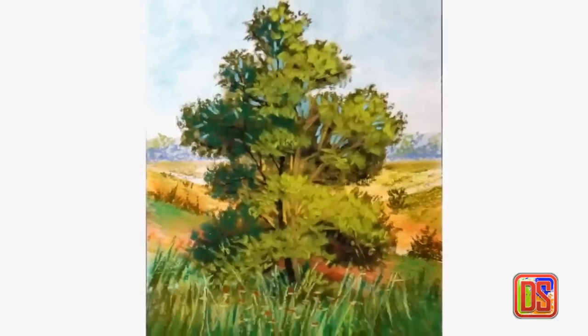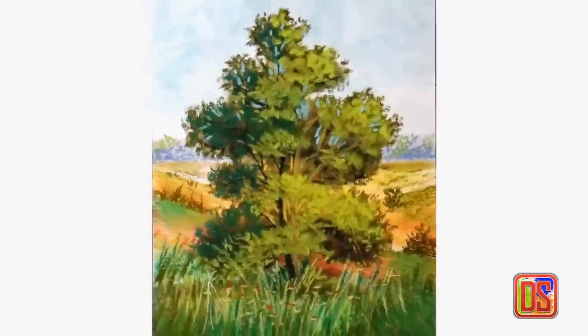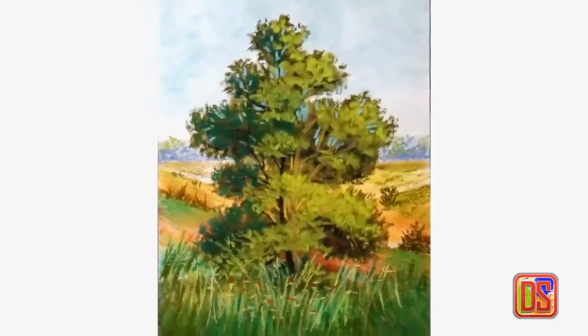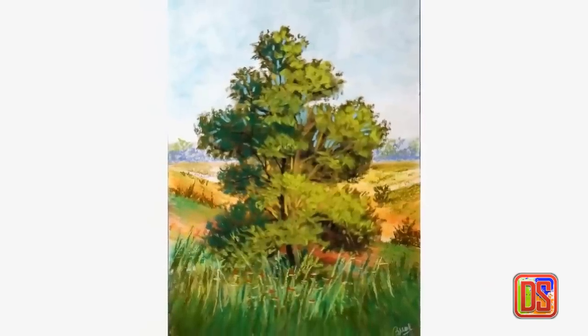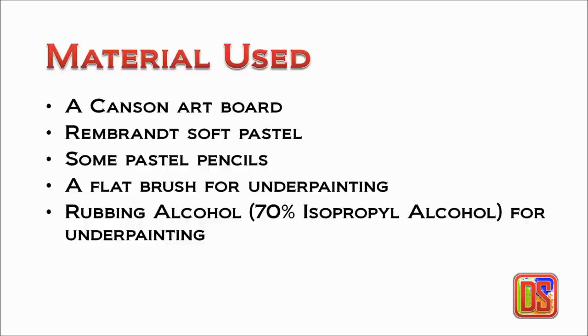Hello everyone, welcome back to Drawing Stack. This is Vishnu, and today I'm going to show you how to make this painting: a tree in the valley with soft pastel. I'll be using the following materials: a Canson artboard, Rembrandt soft pastels, some pastel pencils, a flat brush for underpainting, and rubbing alcohol for underpainting. So let's get started.